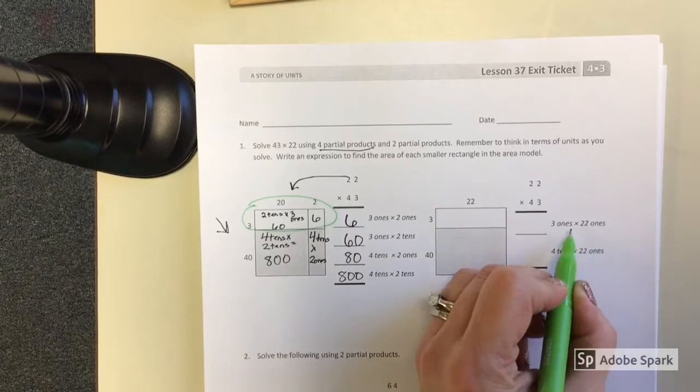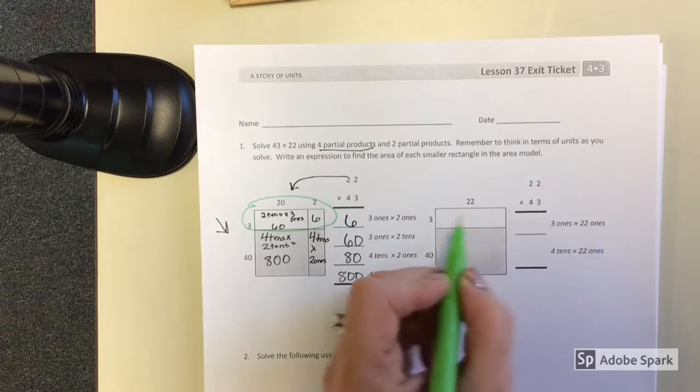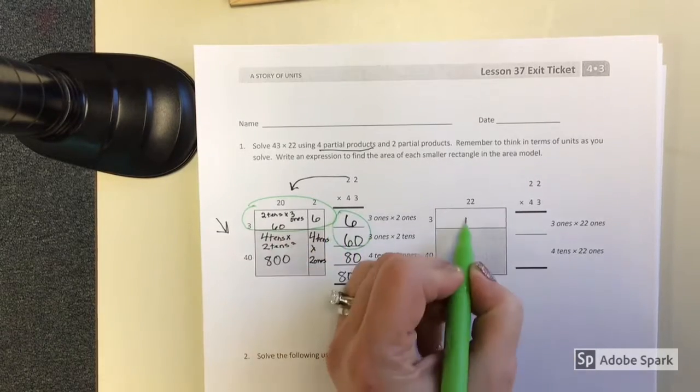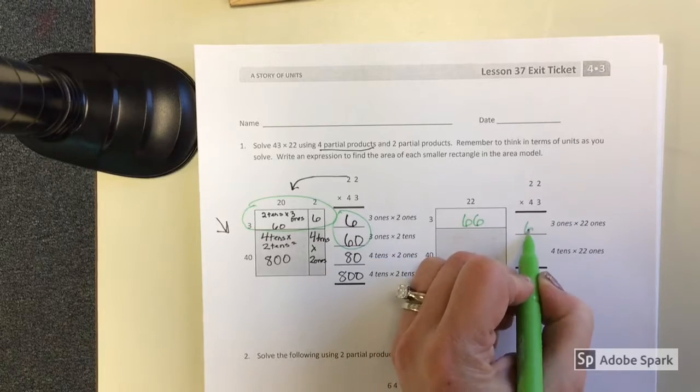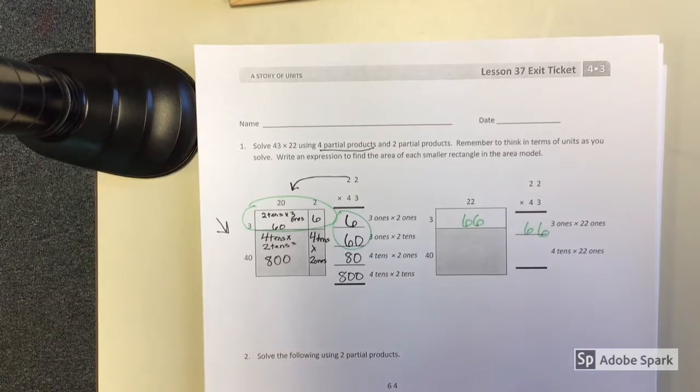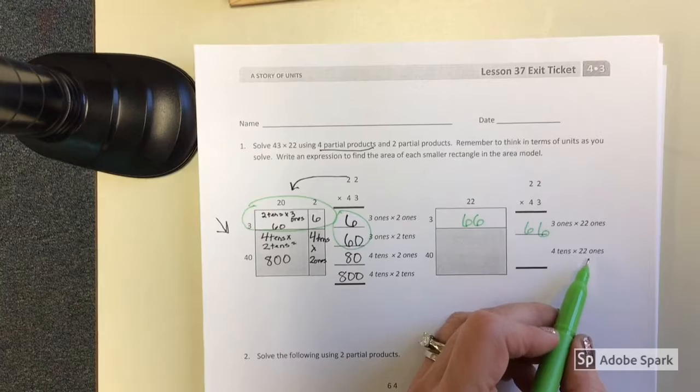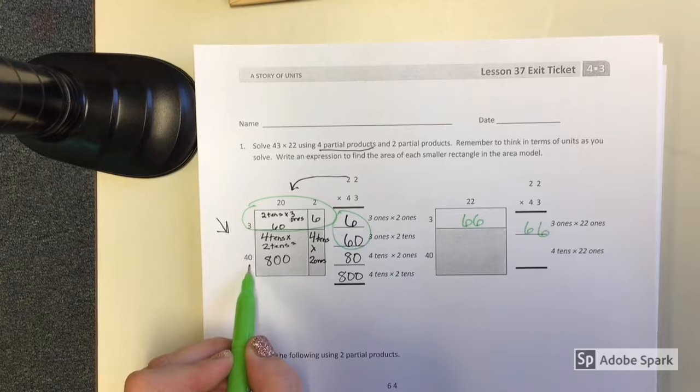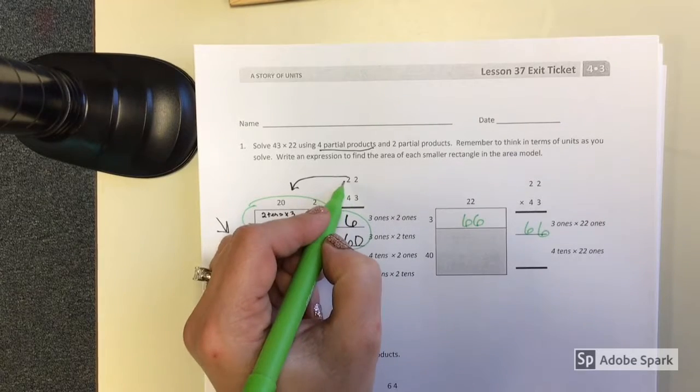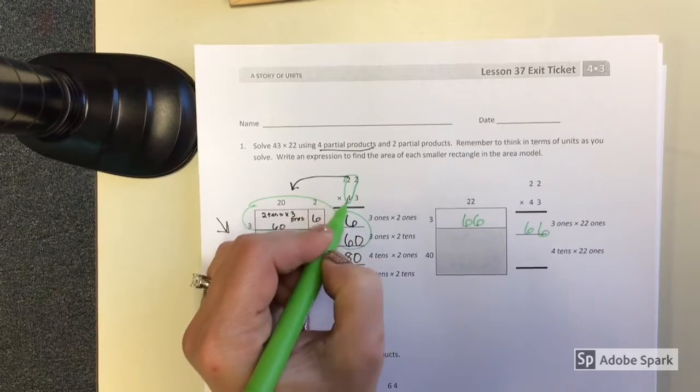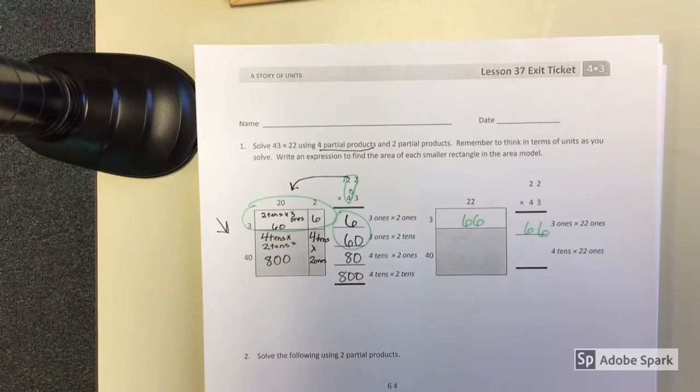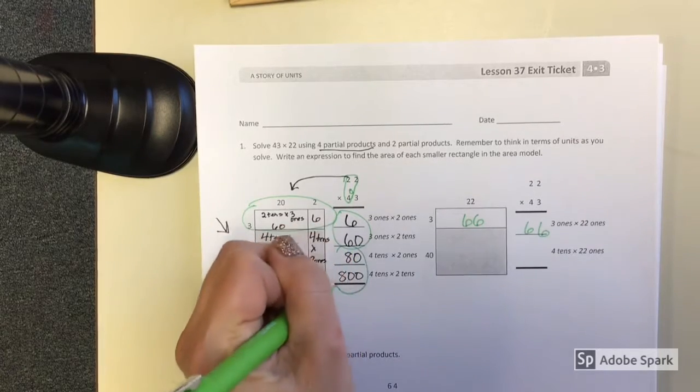So 22 times 3. 22 times 3 is going to be 60. 22 times 40. And if you look right here, maybe that's a 40. 22 times 40. So 22 times 40 would be the sum of these two numbers.